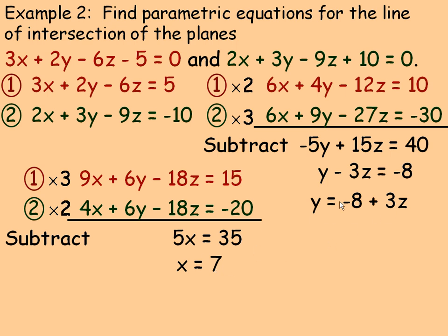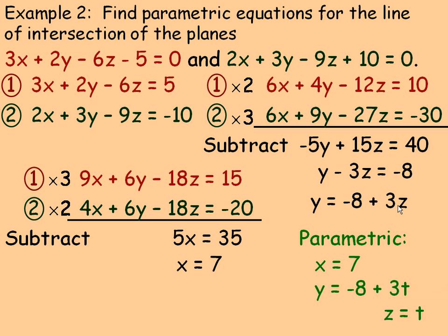These results form our parametric equations for the line of intersection. We let z be the parameter t, so z equals t. Substituting t for z in the expression for y gives y equals negative 8 plus 3t. So the parametric equations are x equals 7, y equals negative 8 plus 3t, z equals t. Substituting any value of t gives a point on both planes.